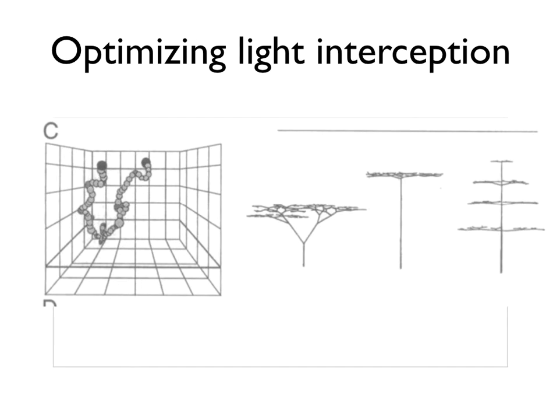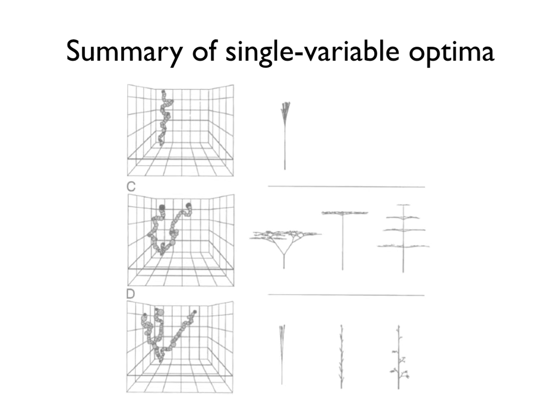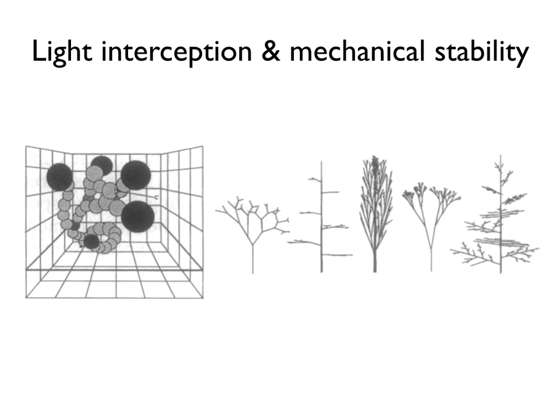None of these actually look like real trees, do they? The really cool thing that Niklas did is he then took the summary of single variable optima and started mixing them together. This is a mixture of reproductive success and mechanical stability, and this is the model that shows light interception and mechanical stability. We're starting to see shapes that look a little bit more like the trees we have.